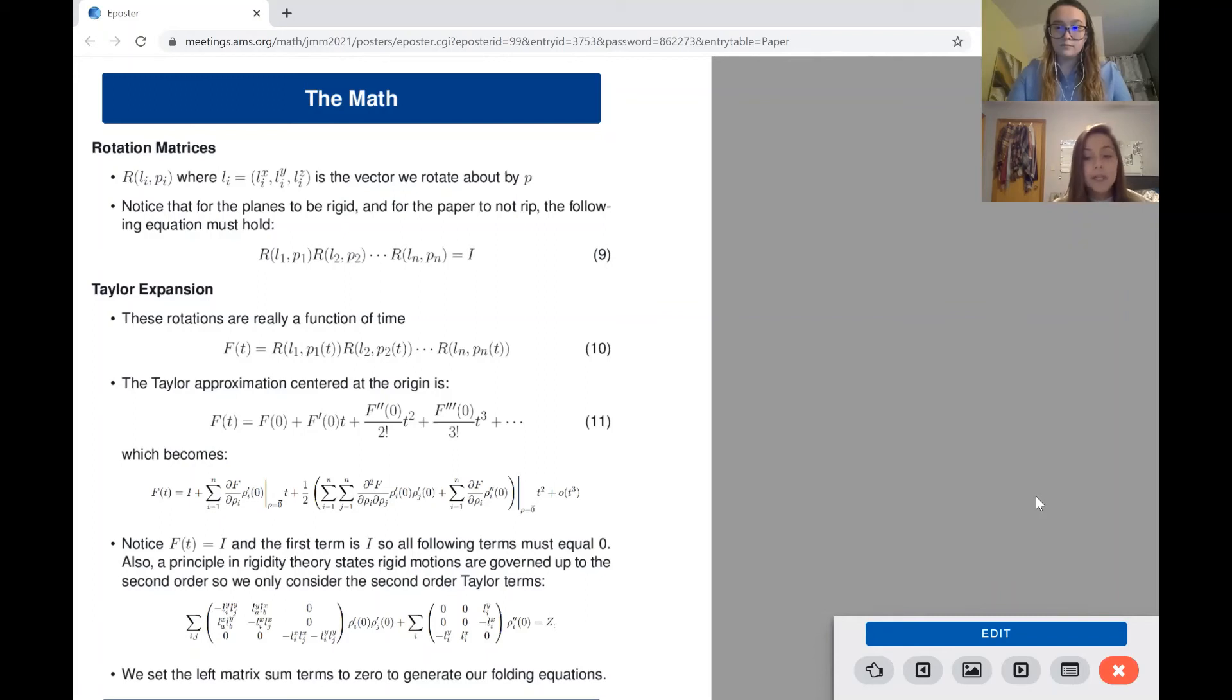So notice that the first term is the identity matrix i, since f of 0 is like plugging in a folding angle of 0, implying no folding is done. So all other terms in our equation must equal 0 since the entire function f of t is equal to the identity matrix.